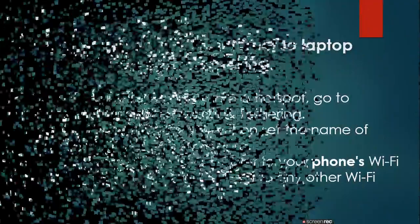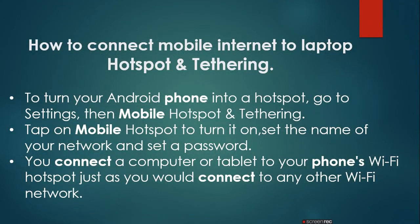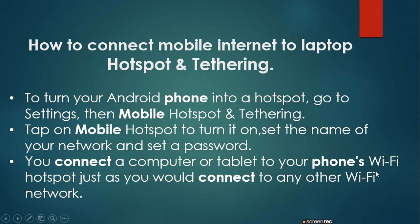Next is how to connect the mobile internet to laptop via hotspot and tethering. To turn your Android phone into a hotspot, go to Settings, then Mobile Hotspot and Tethering. Tap on Mobile Hotspot to turn it on, set the name of your network and set a password. You connect a computer or tablet to your own WiFi hotspot just as you would connect to any other WiFi network.